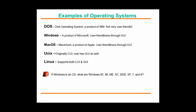Now let me ask you: if Windows is an operating system, what are Windows 95, 98, 2000, XP, 7, 8, and the upcoming 9 and 10? Exactly — if Windows is an operating system, those are flavors or versions of that operating system. Similarly, UNIX and Linux are also operating systems, and like Windows, they have various flavors or versions.